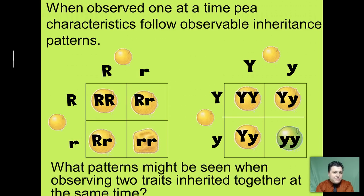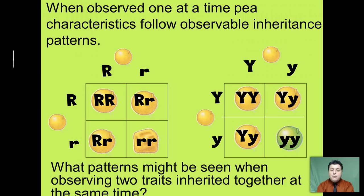When observing the characteristics inherited one at a time, these characteristics showed very predictable inheritance patterns. For example, when a hybrid round was crossed with a hybrid round, Mendel always seemed to get about three-quarters round and one-quarter wrinkled. While with yellow, hybrid yellow crossed with hybrid yellow, you would get approximately three-quarters yellow and one-quarter green.